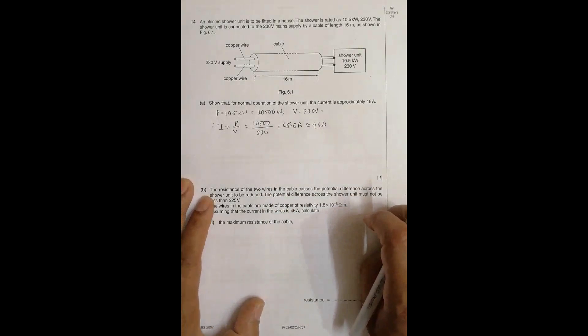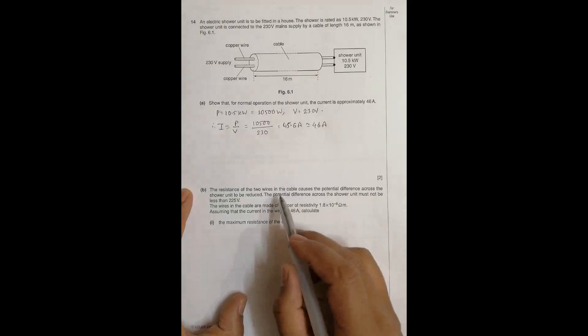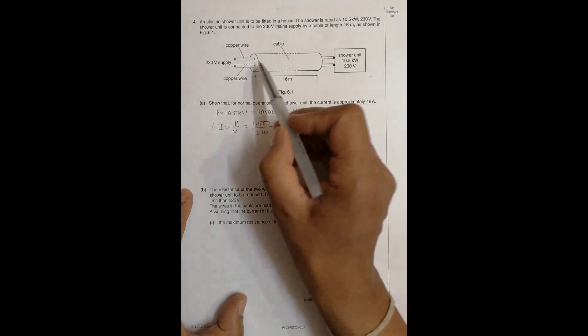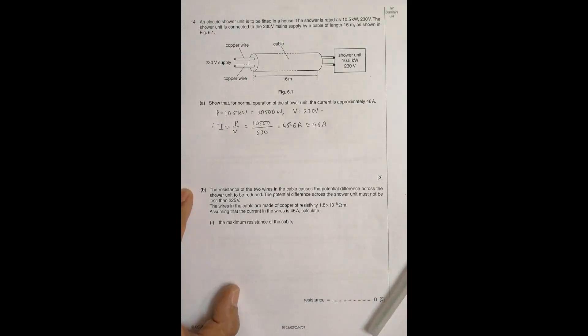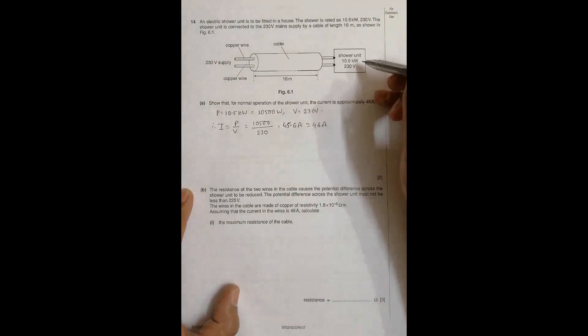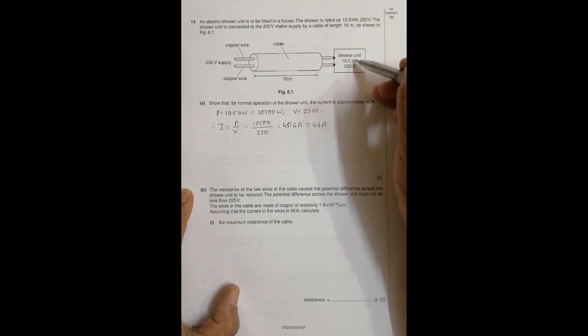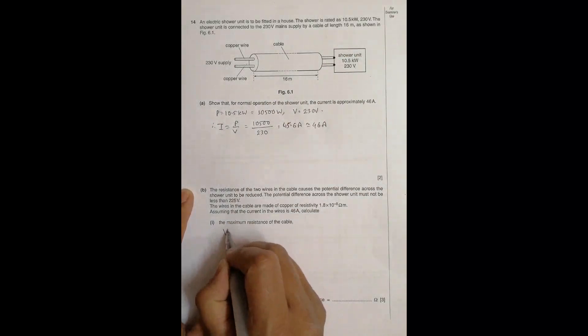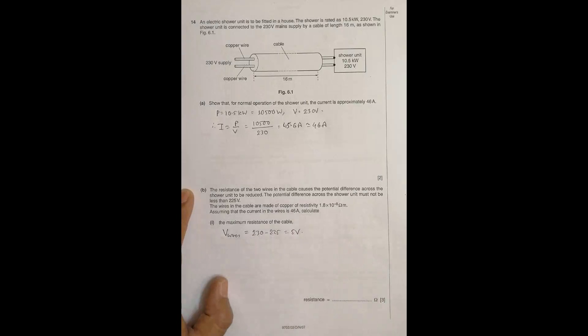Now, the resistance of the two wires in the cable causes the potential difference across the shower unit to be reduced. It gives 230 volt but because of the resistance here the PD is slightly reduced. The potential difference across the shower unit must not be less than 225 volt. So the PD across the wires should not be more than 230 minus 225 equals 5 volt.